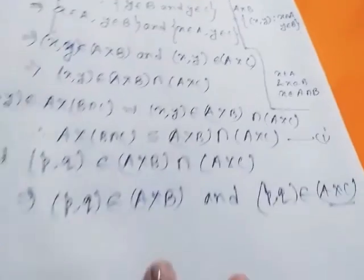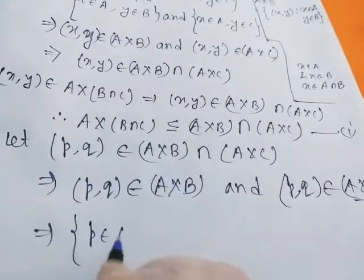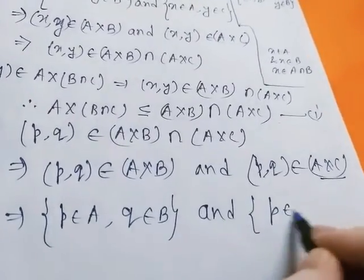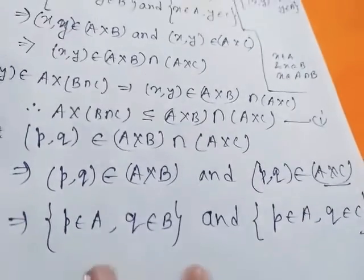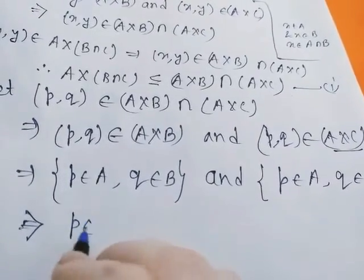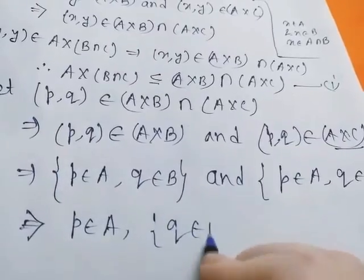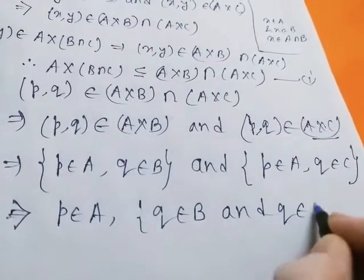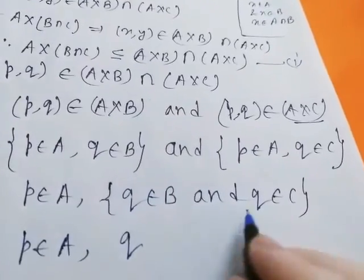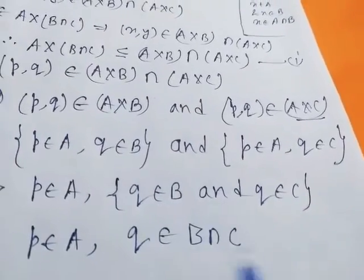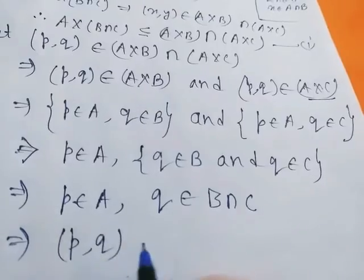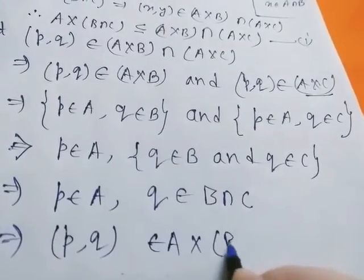This implies p belongs to A, q belongs to B, and p belongs to A, q belongs to C, by definition of Cartesian product. Taking p belongs to A as common, we have q belongs to B and q belongs to C. Therefore this implies p belongs to A and q belongs to B intersection C, by definition of intersection. Using the definition of Cartesian product, we can write this as ordered pair (p, q) belongs to A cross (B intersection C).